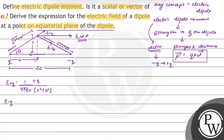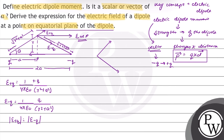The electric field due to minus Q charge is equal to Q upon r squared plus a squared. The magnitude of the electric field due to plus Q charge and the magnitude of the electric field due to minus Q charge are the same, but their directions differ. Since the point is on the normal to the dipole axis, the components of the electric fields along the vertical direction cancel out, and only the horizontal direction components remain.